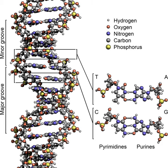The two types of base pairs form different numbers of hydrogen bonds, AT forming two hydrogen bonds and GC forming three hydrogen bonds. The GC base pair is therefore stronger than the AT base pair. As a result, it is both the percentage of GC base pairs and the overall length of a DNA double helix that determine the strength of the association between the two strands. Long DNA helices with a high GC content have strongly interacting strands, while short helices with high AT content have weakly interacting strands. Parts of the DNA double helix that need to separate easily, such as the TATA box in bacterial promoters, tend to have sequences with a high AT content, making the strands easier to pull apart.